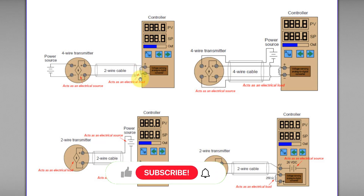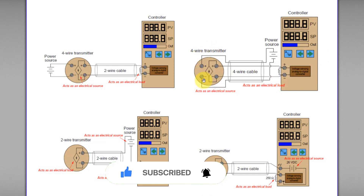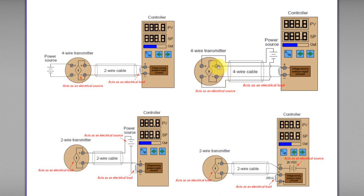This transmitter acts as an electrical source, whereas the controller acts as an electrical load. Again, for this circuit, the controller acts as an electrical load. This is a four-wire transmitter similar to the previous one — powered by an external power source to power up the transmitter. The transmitter output terminal is used for loop communication. This transmitter acts as an electrical source, and the controller acts as an electrical load.